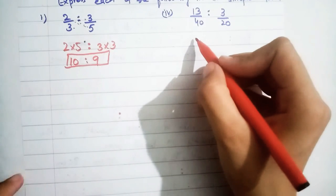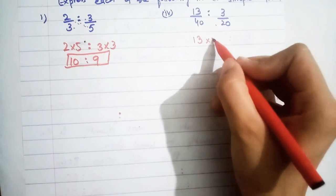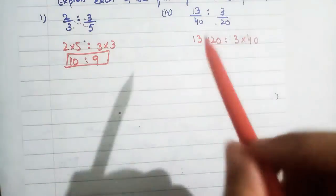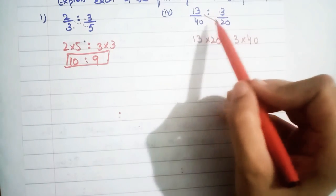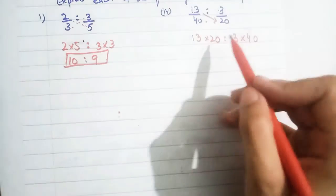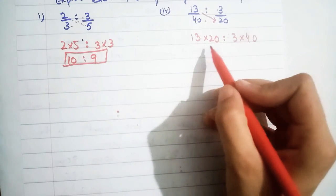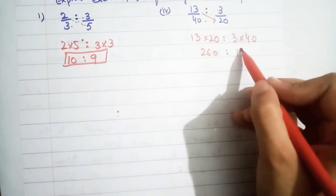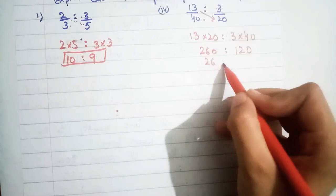For the worked example, cross-multiply: 13 multiplied by 20 is 260, ratio 3 multiplied by 40 is 120. The zeros cancel — but we won't show that cancellation — giving 26 : 12. Then cancel the common factor of 2 to get 13 : 6 as the answer.